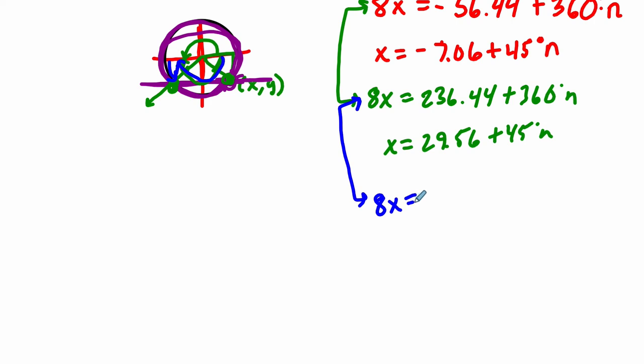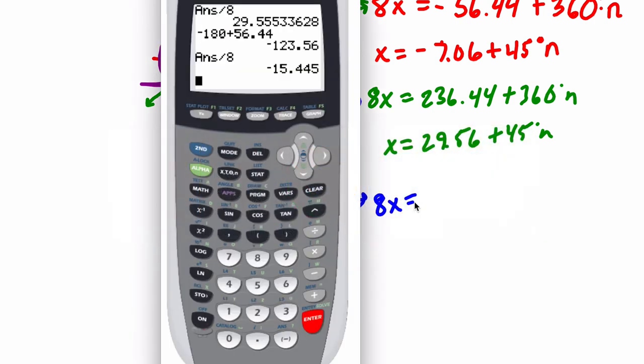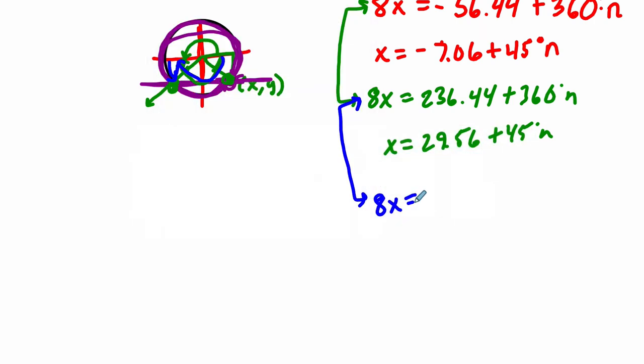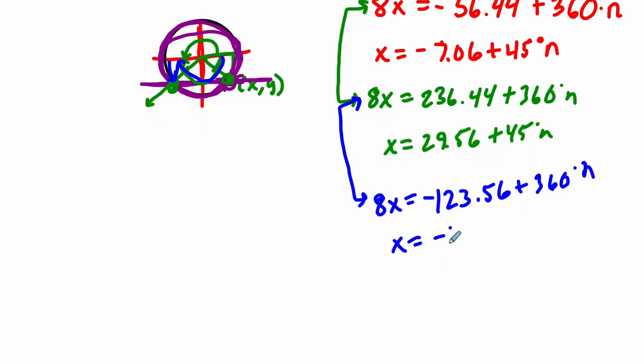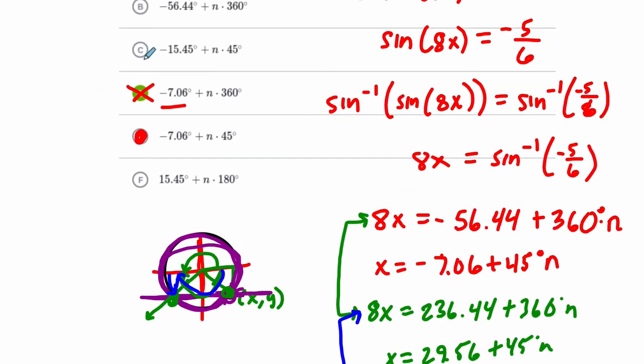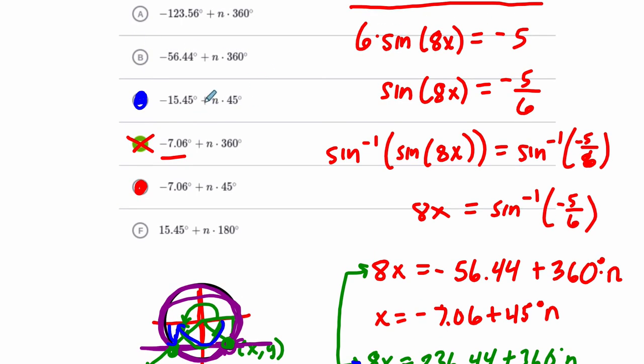So, 8x could also be all of those numbers that we just got. Plus 360 degree rotations. And then I divide everything by 8, and I get about negative 15.45 plus 45 degree rotations. So, that's the other answer I'm getting. And I see it right here. Negative 15.45 plus 45 degree rotations.